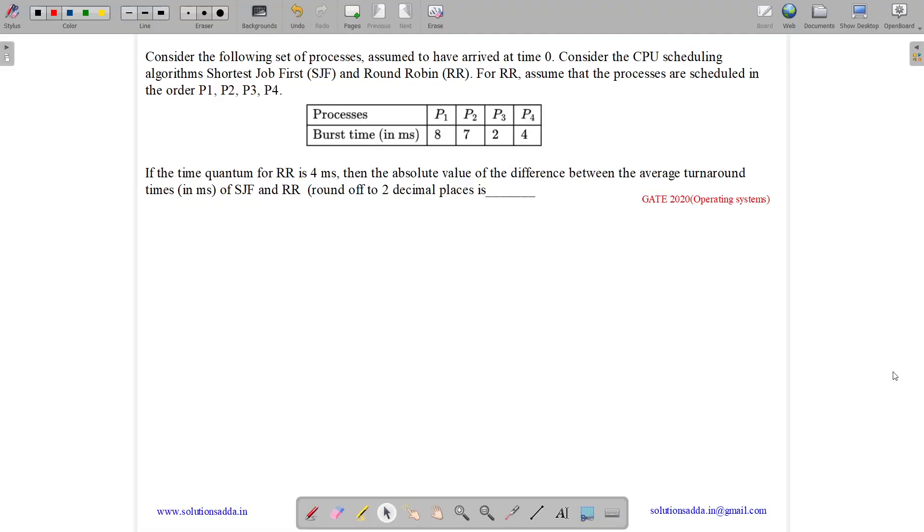This question belongs to the operating system subject and was asked in GATE CSE 2020. The question states: Consider the following set of processes, assumed to have arrived at time zero.